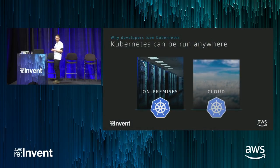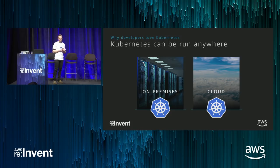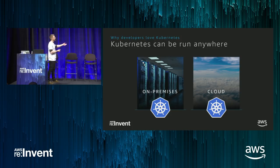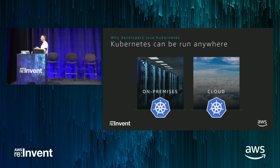Kubernetes can be run anywhere — on your laptop in the form of Minikube, on-premise, or in the cloud. Many customers using it today tell us that's exactly why they're using it. They can make investments on-premise now, take legacy applications, put them in containers, and run them in Kubernetes, while simultaneously making investments in modern microservices and running them both on-premise and in AWS.